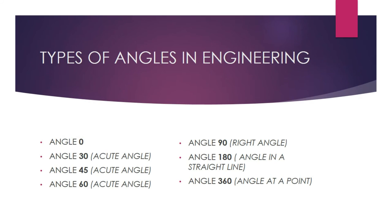Types of angles in engineering: we have angles of 0, 30, 45, 60, 90, 180, and 360 degrees. These are the basic types of angles in engineering. Other angles can be formed from these angles — we will talk about this in a later section of this video.